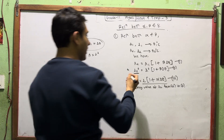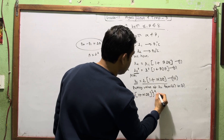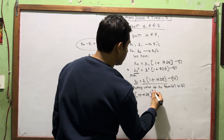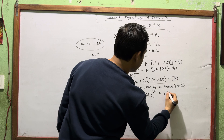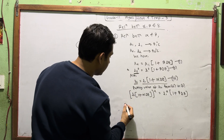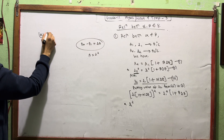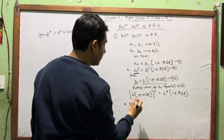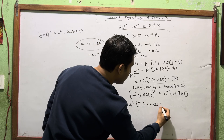We will substitute the value of L2 from equation 3 into equation 2. The value is L1 times 1 plus alpha del theta, and that quantity is squared, equal to L1 squared times 1 plus beta del theta. Now let's expand the bracket using A plus B squared equals A squared plus 2AB plus B squared.